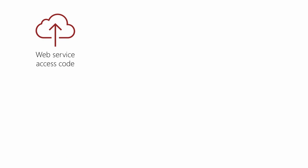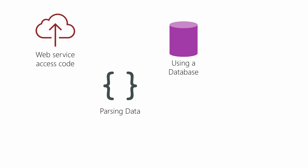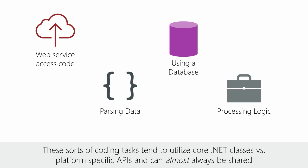Sharing is good, so what can we share? Generally speaking, any time you write a method which does not depend on the platform, you can potentially share it. This includes your business or processing logic, parsing operations, web service access code, database work, and even working with asynchronous tasks. Notice how none of these are tied to platform operations. They all depend primarily on core .NET features that are usable no matter what type of application you're building.